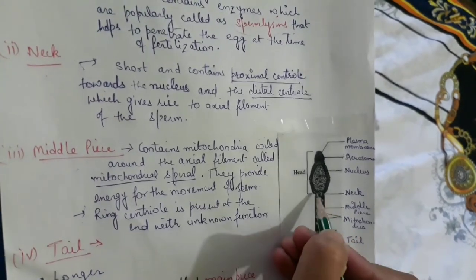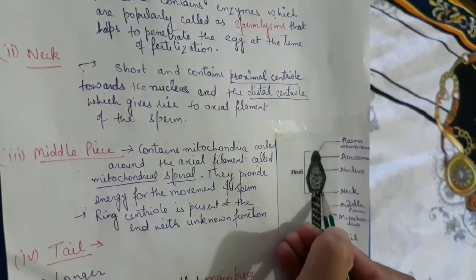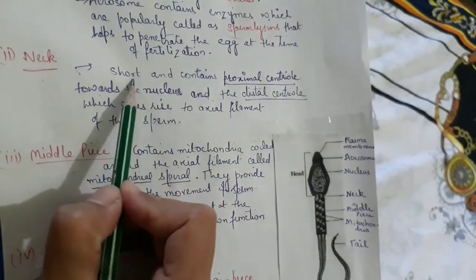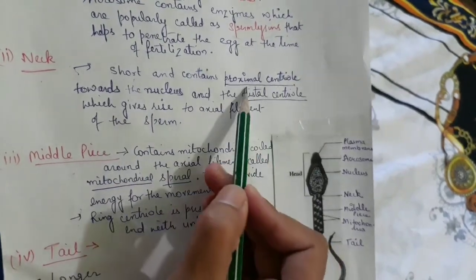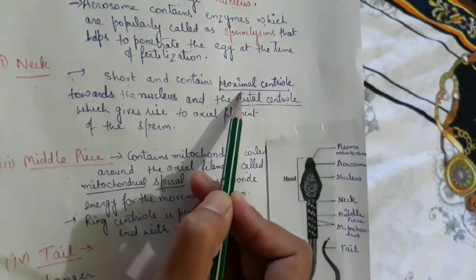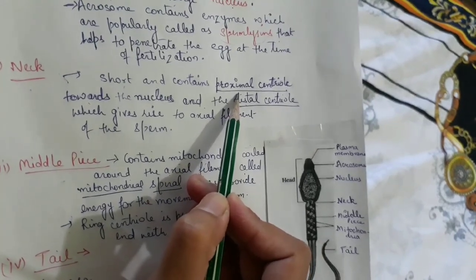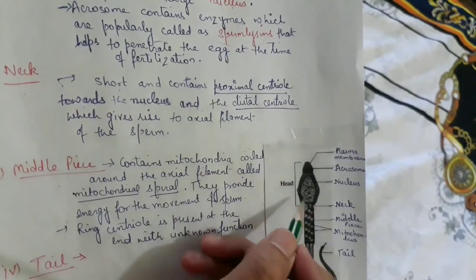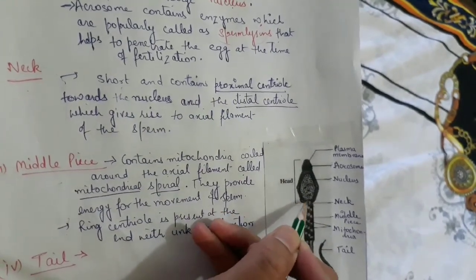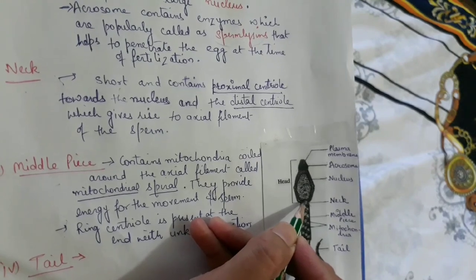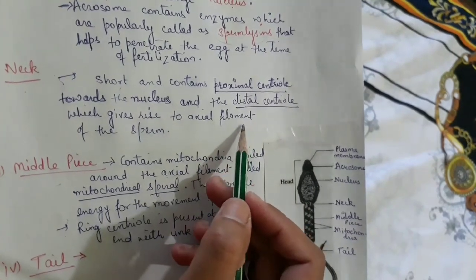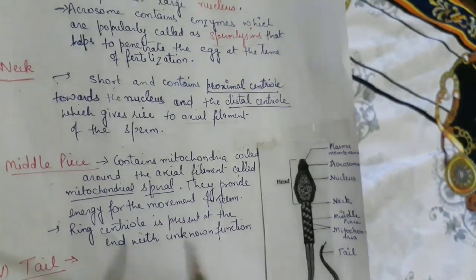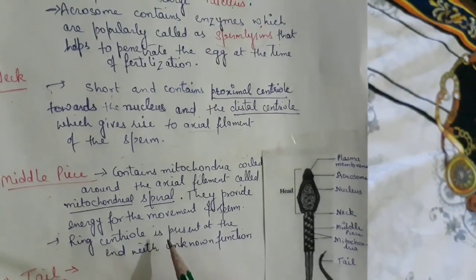Next is the neck, which is a very short part with a C-shaped depression. Inside the neck there is a centriole. There are actually two centrioles: the proximal centriole, which is closer to the nucleus, and the distal centriole, which is farther away and will later form the axial filament of the sperm.